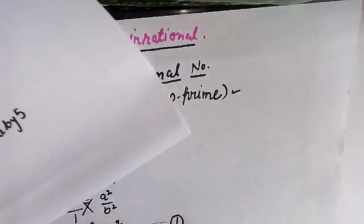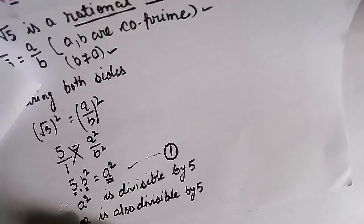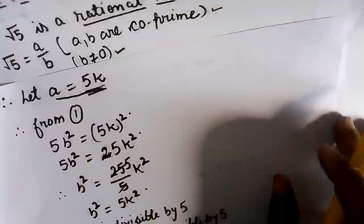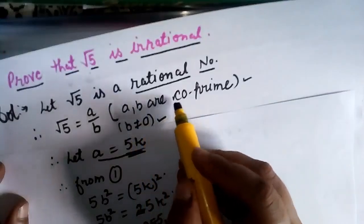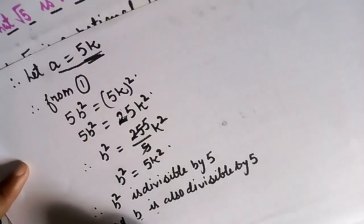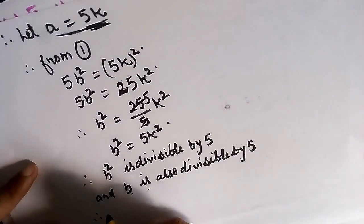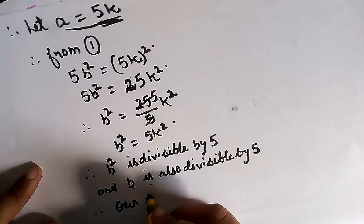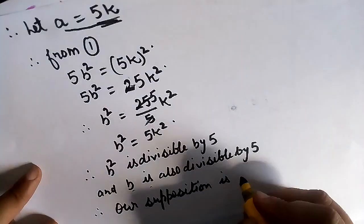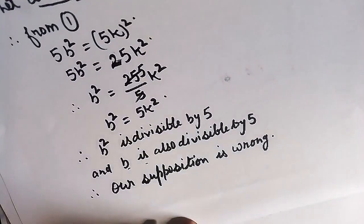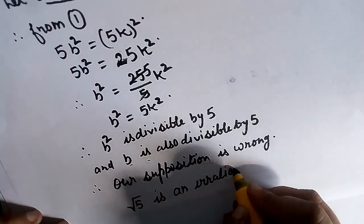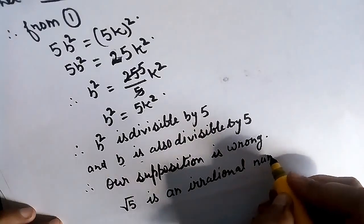This means our supposition is wrong. We supposed that a and b are coprime, but here we proved that both are divisible by 5. So our supposition is wrong. Therefore, √5 is an irrational number. In the same way, you can prove that √3, √2, √7, etc. are also irrational.